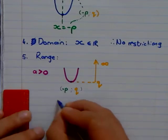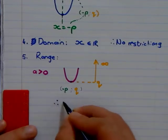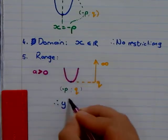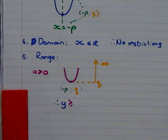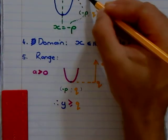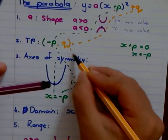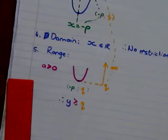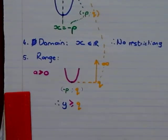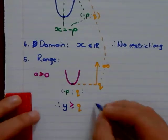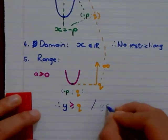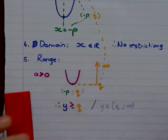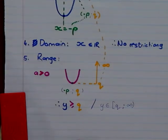So therefore, to conclude, we can write this as y greater or equals than my q. So all the way from there, it links. If you don't want to write this way, you have this format also. When y is an element, I say that we start it at q and go up to infinity.